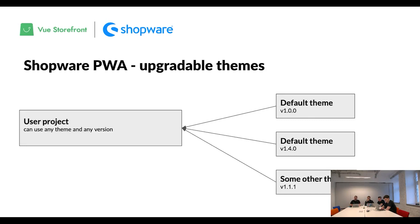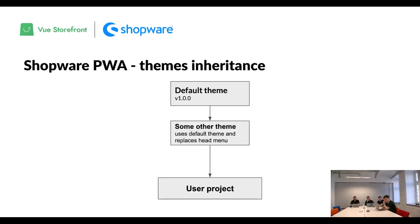The third feature is upgradable themes. The end user project can use any theme with different versions, and it doesn't affect the end project — you can switch themes, pick another version, and everything still works. You can also overwrite any theme element. Better still, we have theme inheritance. For example, here we have our default theme and if you want a different header menu, you create a new theme with inheritance from the default theme, change only that element, and share it with others.